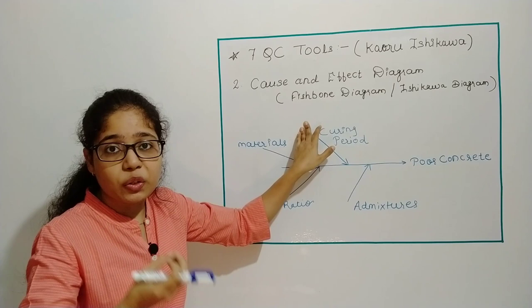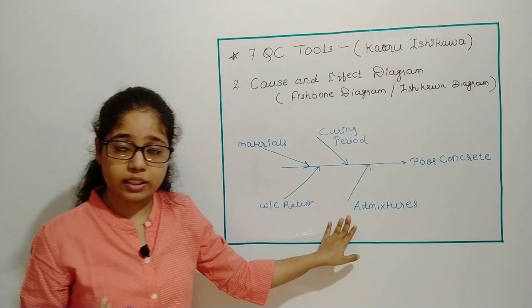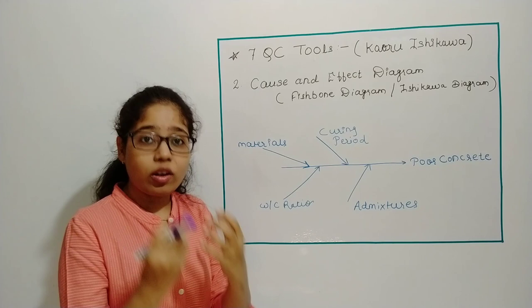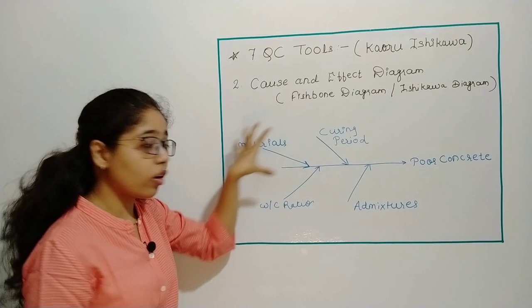I have to check the materials used, the curing period - whether I have done proper curing or not. Then admixtures - if I have used some admixtures like retarder or superplasticizer, how many percent did I add? These are all causes of why the concrete has poor quality.